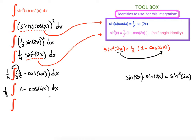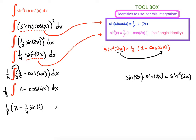From now on we can integrate, because we know the anti-derivative of one and the anti-derivative of cosine of 4x. The anti-derivative of one with respect to x is x, so it's going to be one eighth times x minus. The anti-derivative of cosine of 4x is one fourth sine of 4x plus C.